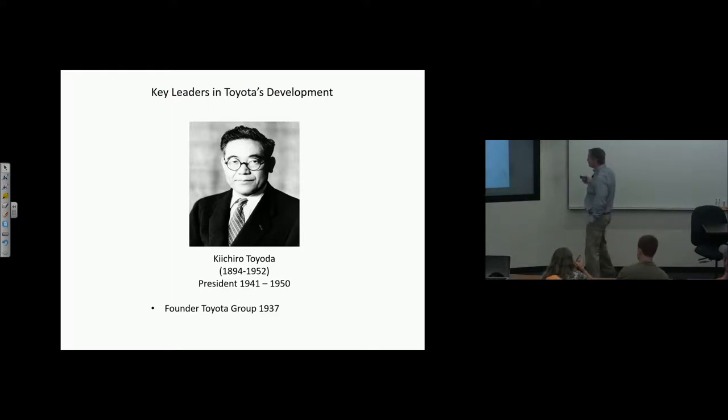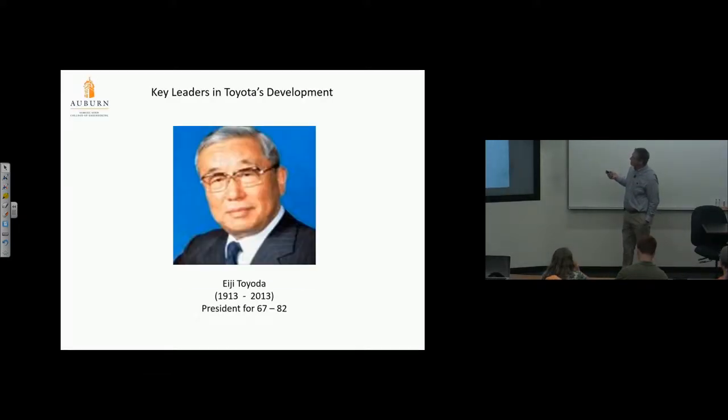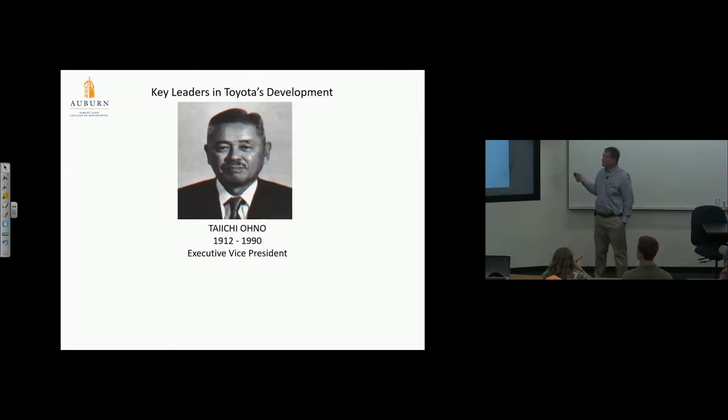Kiichiro Toyota, founder of the Toyota Motor Company in 1937, implemented chain-driven assembly lines. Eiji Toyota, who died in 2013 at 100 years old, was president from 1967 to 1982, credited with initial just-in-time and jidoka implementation. This is Taiichi Ono, the Henry Ford of Japan, responsible for the third generation of manufacturing. He's not a Toyota, not part of the family—let that be a lesson about nepotism.